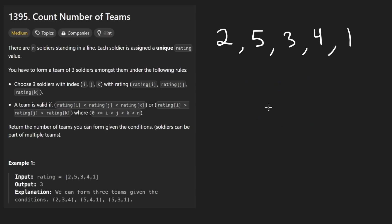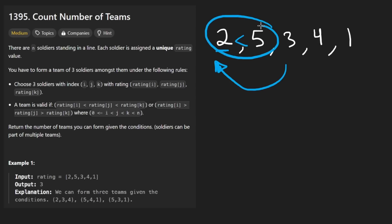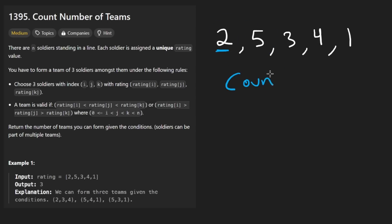One thing to note about this problem is that every single element is distinct — they're not necessarily sorted, but they are distinct. So I thought, since it seems like a subsequence problem, let's do some decision tree stuff. We have a pointer i, we iterate through the input, we keep track of what the previous element was so we can compare elements and see if they're in increasing or decreasing order. And we keep track of how many elements we have — the current count — because as soon as we have exactly three elements chosen, we're done.